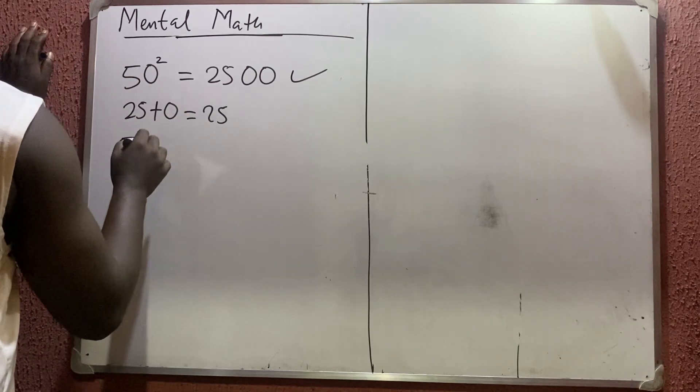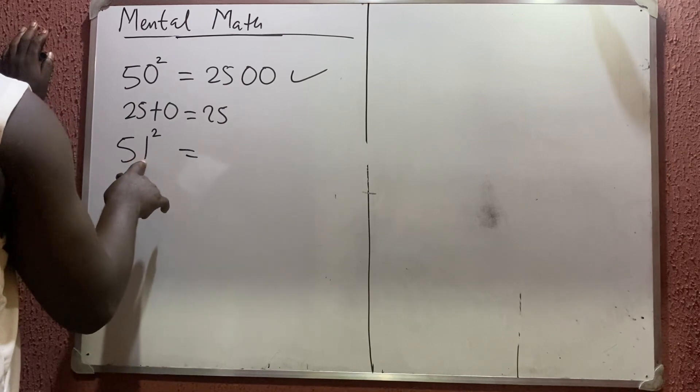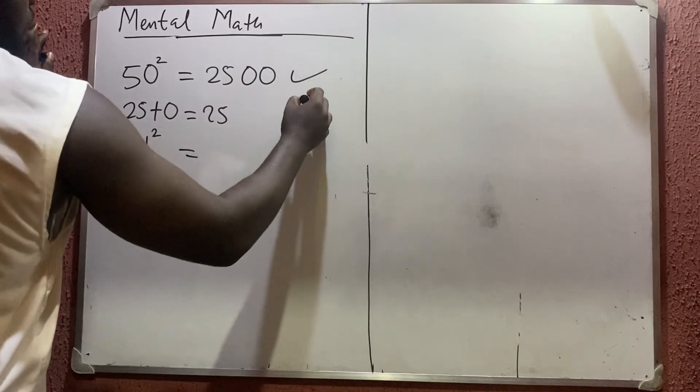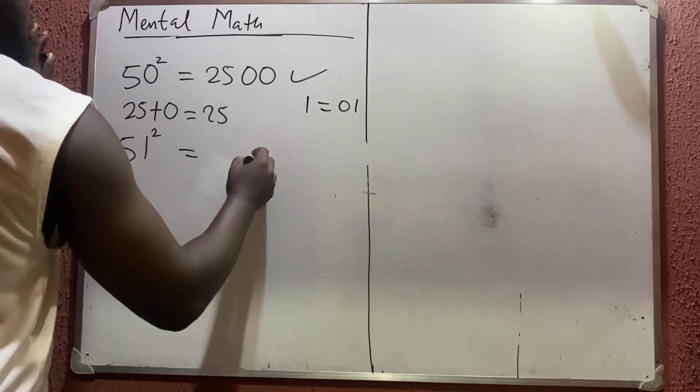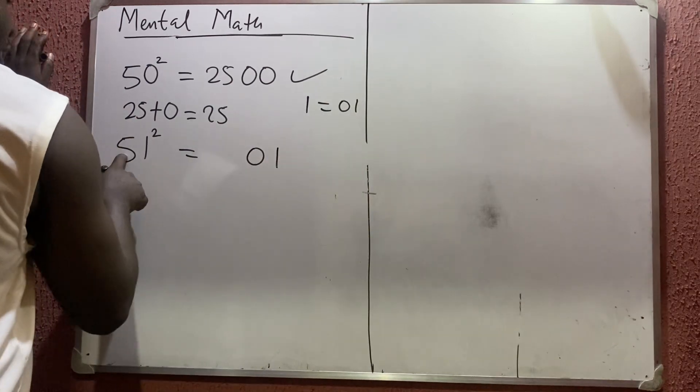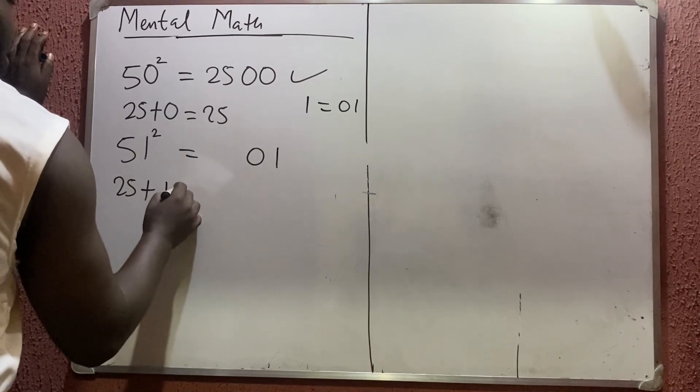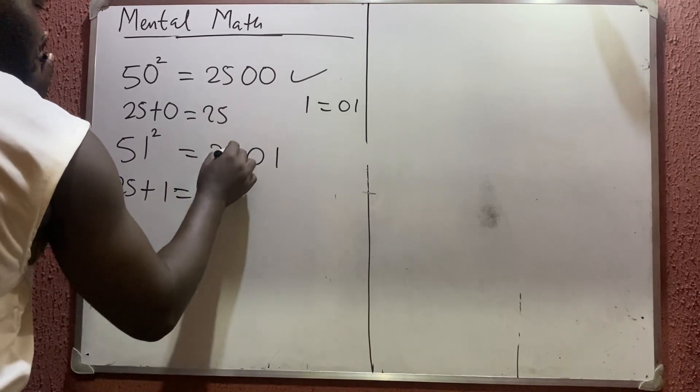51 squared. Now 1² is 1, but I'll write that as a two-digit number: 01. Then 5² is 25. I say 25 plus this 1 I'm seeing here, which gives you 26. So you put 26 here, and that is the answer.